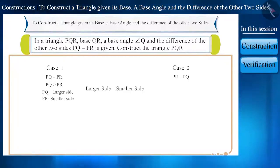Similarly, if the value of PR minus PQ is given, then the length of side PR will be big and the length of side PQ will be small. And friends, as per the difference given in the sides, the construction of a triangle is done in two ways.